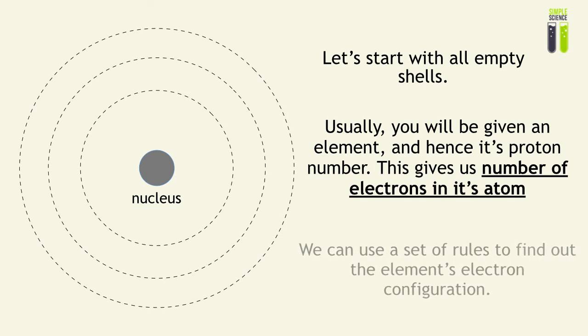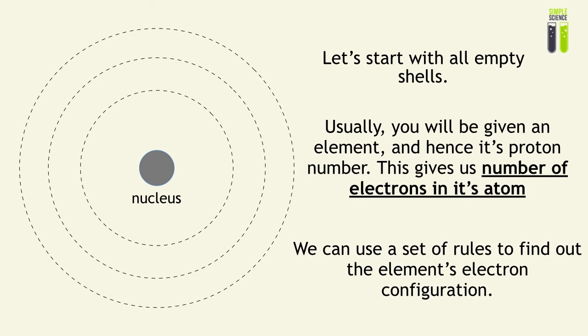So we can use a set of rules to find out how the electrons, based from the number of protons that you are given from the element, we can use that to find out the electron configuration of an element.